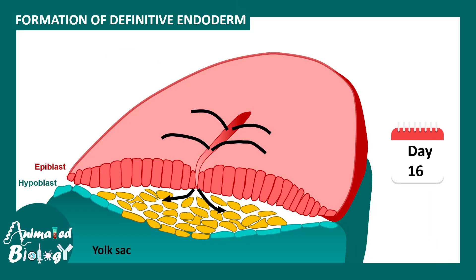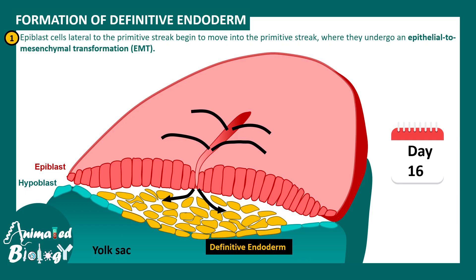Formation of the definitive endoderm is the next process. At around day 16, many of the epiblast cells move inside by the process of ingression and populate the inside of the embryo. Eventually, they replace the cells in the hypoblast layer and form the definitive endoderm. The cells first need to detach from the epiblast layer, and this happens via a process known as epithelial-to-mesenchymal transition, or EMT. The first ingressing epiblast cells invade the hypoblast and displace its cells to create the definitive endoderm.